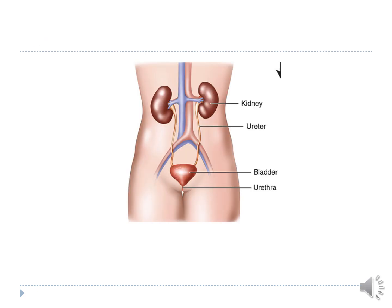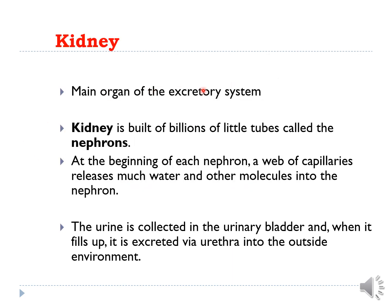This is a diagram from the urinary system. It shows you that it consists of two paired kidneys, then draining the urine through the ureter into the urinary bladder and then exiting through the urethra. The main organ of the excretory system is the kidney, built of billions of little tubes called nephrons.